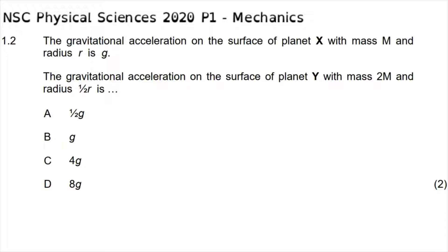The gravitational acceleration as a result of a planet's mass and radius is given by the formula g equals the universal gravitation constant multiplied by the mass of that planet divided by the radius of that planet squared. This is the formula for the original planet, and we are now trying to find what the gravitational acceleration on the new planet is. The universal gravitation constant remains the same.